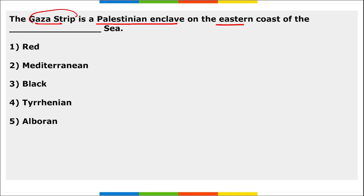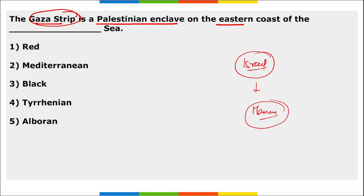The Gaza Strip is the location where Israel is bombing, and the Israel versus Hamas war is going on. The question asked here: Gaza Strip is on the eastern coast of which sea? It is on the eastern coast of the Mediterranean Sea.